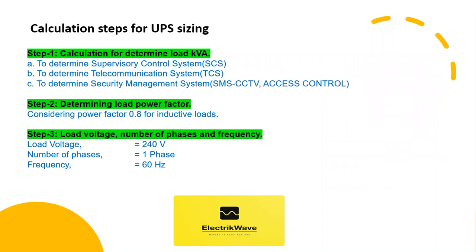The UPS selection process involves several steps. Step 1: Calculate load KVA — A) Determine Supervisory Control System (SCS), B) Determine Telecommunication System (TCS), C) Determine Security Management System (SMS), which includes CCTV, access control system, etc.